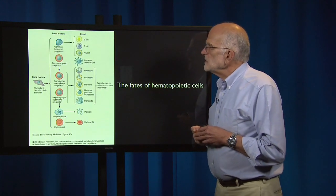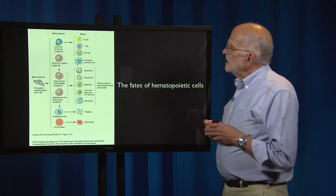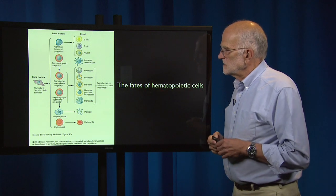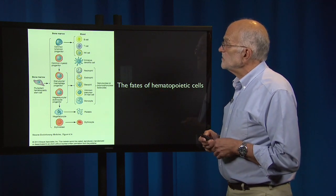Here is the menagerie of cells in the immune system. They all start with a pluripotent hematopoietic stem cell that can produce a lymphoid progenitor, a myeloid progenitor, a megakaryocyte, or an erythroblast — so our red blood cells also come from the same source. The myeloid progenitors can produce neutrophils, eosinophils, basophils, and monocytes. The lymphoid progenitors produce B cells, T cells, natural killer cells, and immature dendritic cells. These are the main cell types in the adaptive immune system.